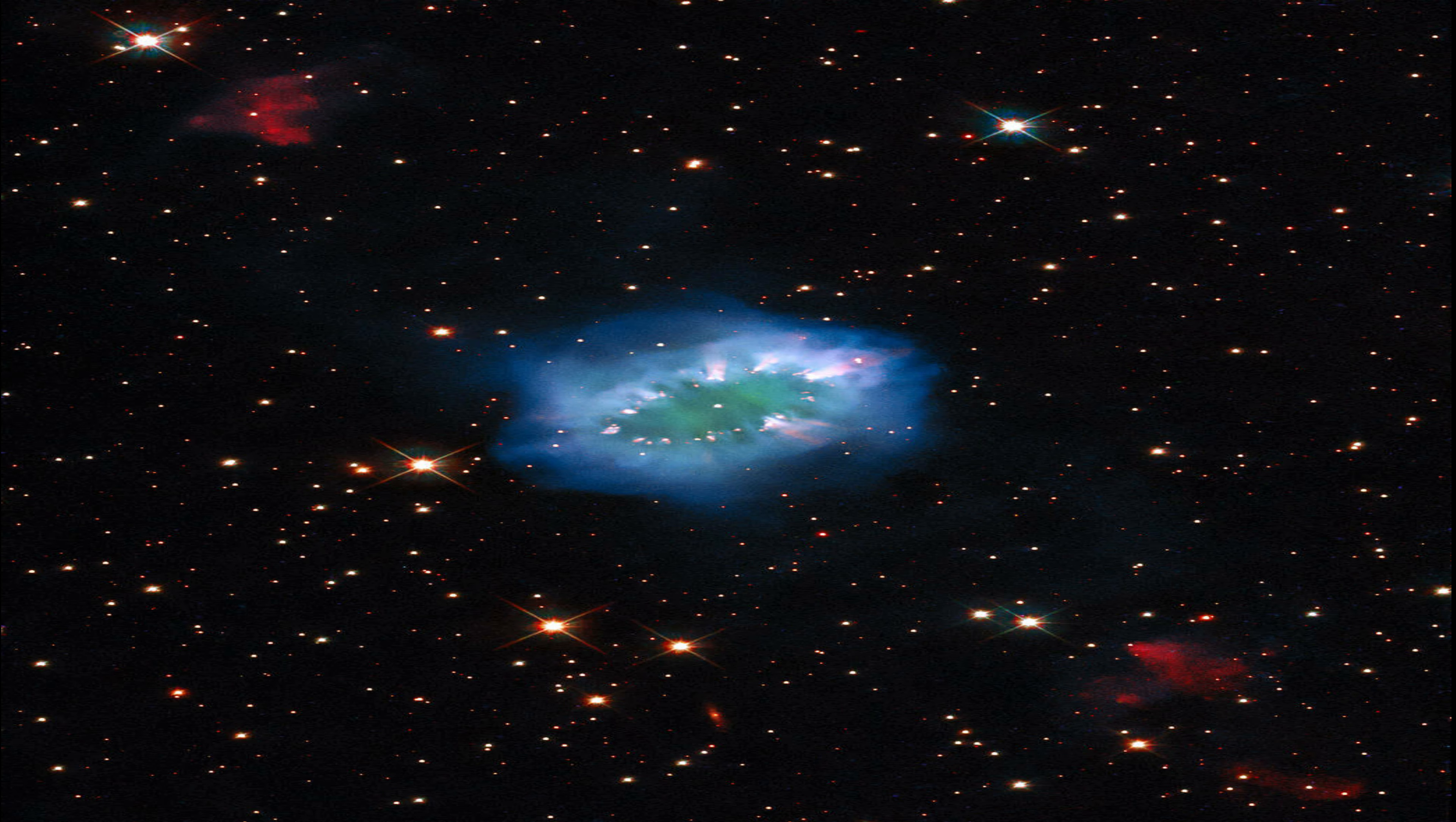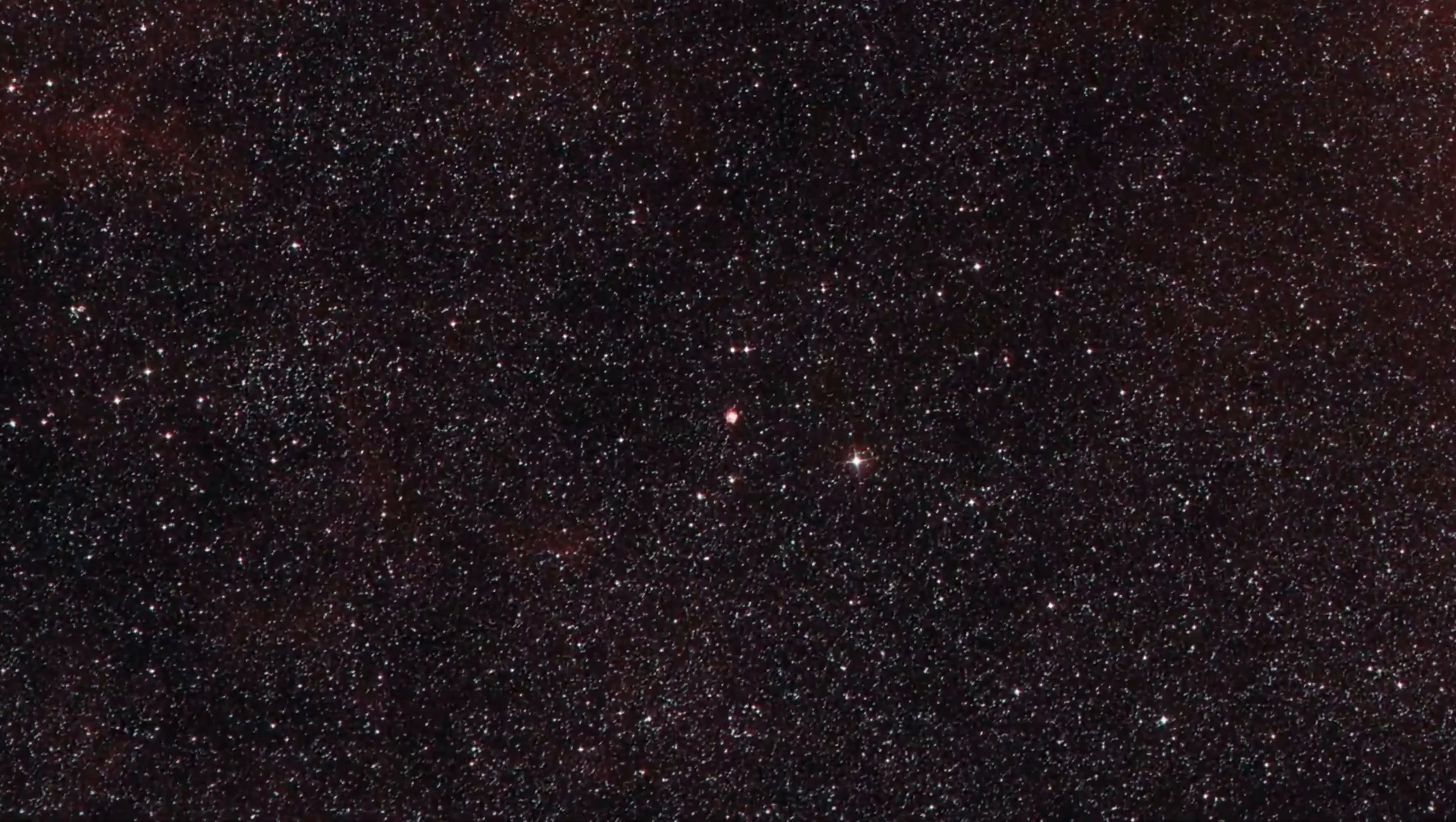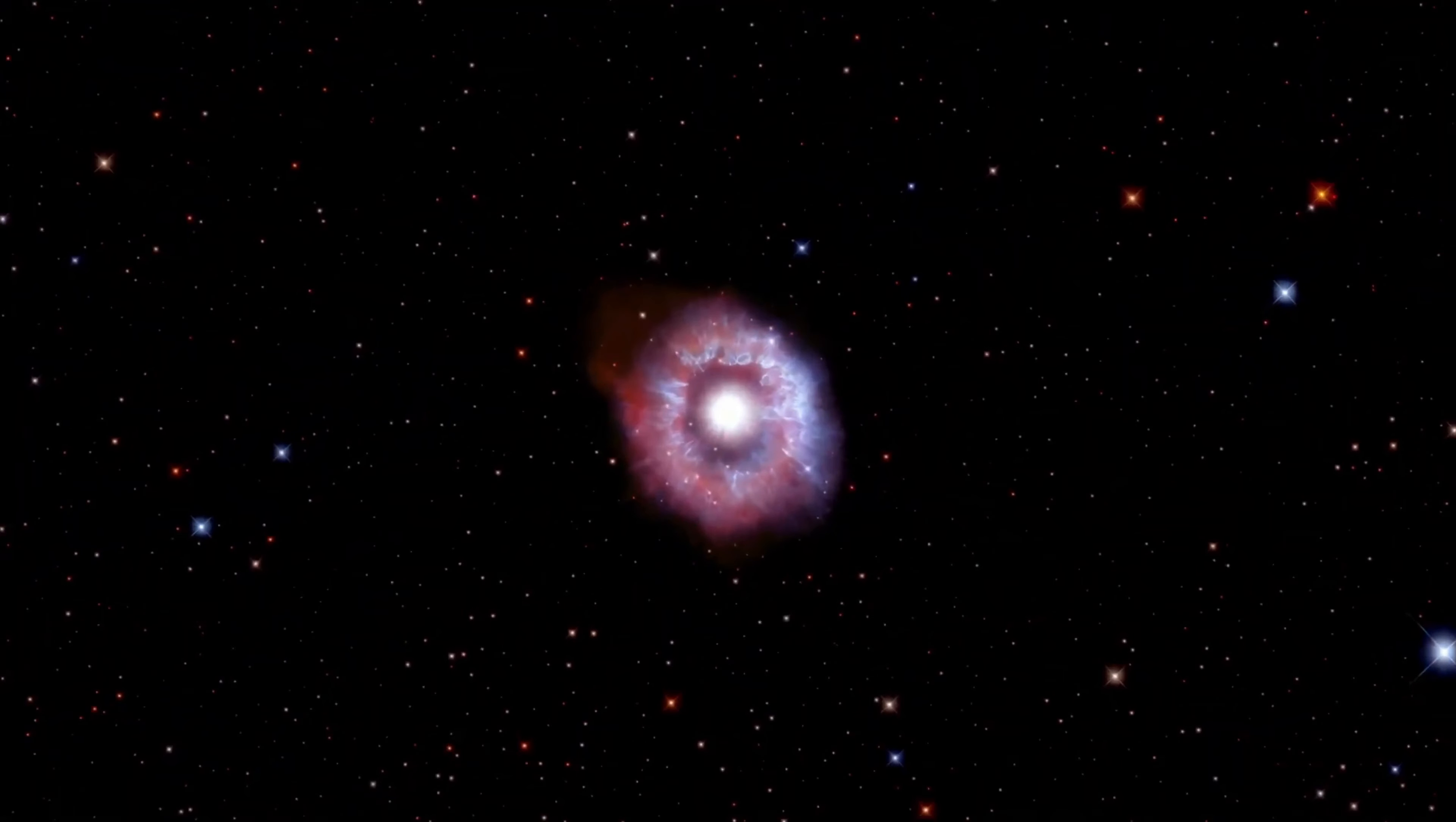As Zhu processed the images, he very carefully removed the star's glare to leave behind only light emitted by the planet. In doing so, he improved the limit of how close a planet can be to its star in Hubble observations by a factor of 5.